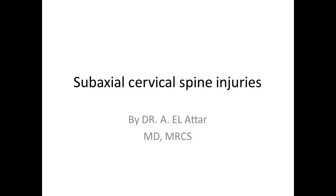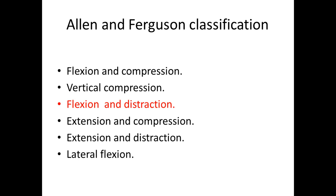Today we will complete subaxial cervical spine injury. The subaxial region is from C3 to C7. We already finished C0, occipital condyle, C1 atlas, and C2 axis. We classify subaxial injuries according to the Allen-Ferguson classification, which depends on the position of the head at the time of injury and the deforming force — similar to the Lauge-Hansen classification in the ankle. For example, flexion is the position of the head and compression is the actual deforming force.